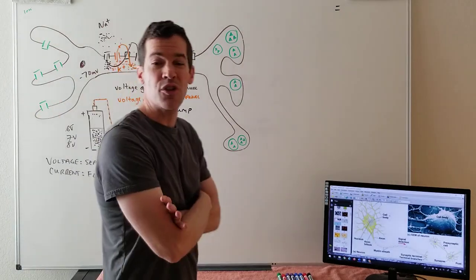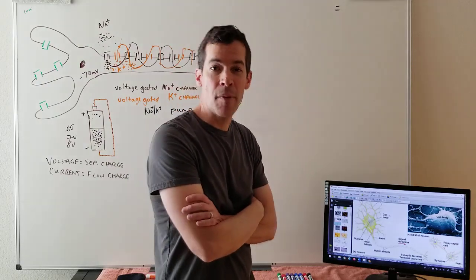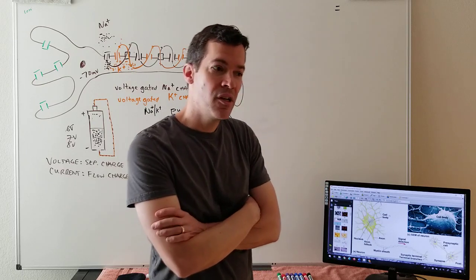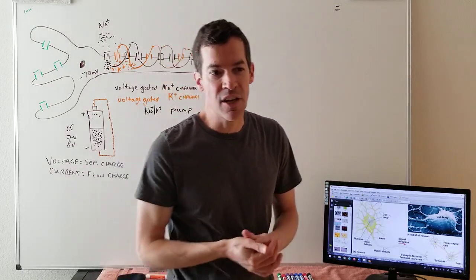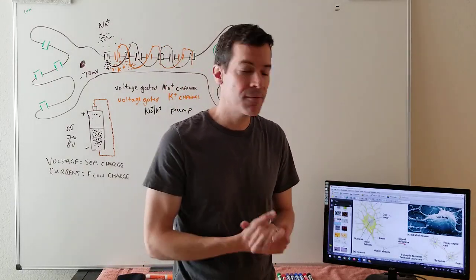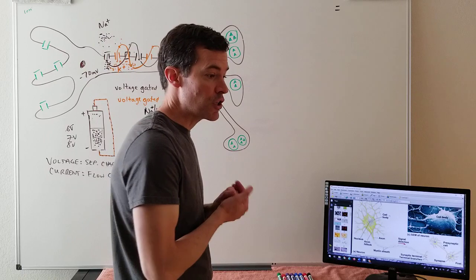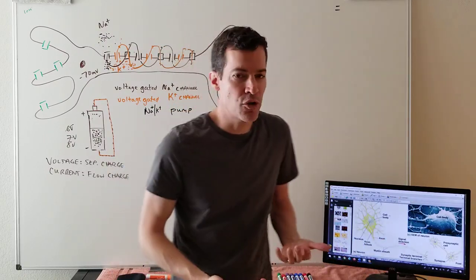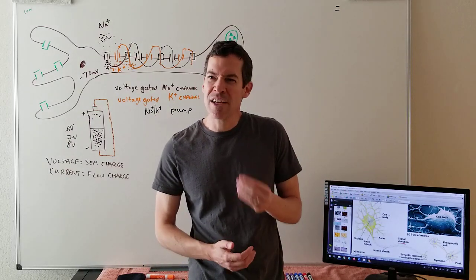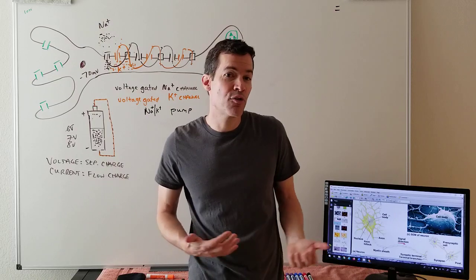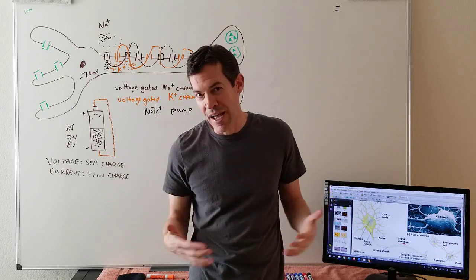Some nerve cells fire as slowly as 2 to 4 miles per hour; others fire upward of 200 to 250 miles per hour. Why is there such a difference — almost a hundredfold? From a functional standpoint some things don't need fast computing, but what physically makes one nerve cell fire nearly a hundred times faster than another?